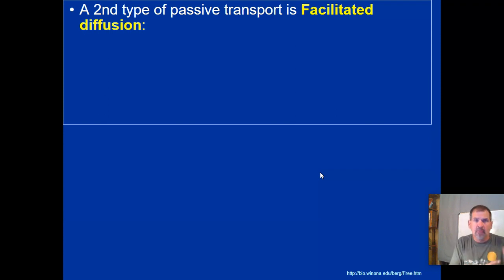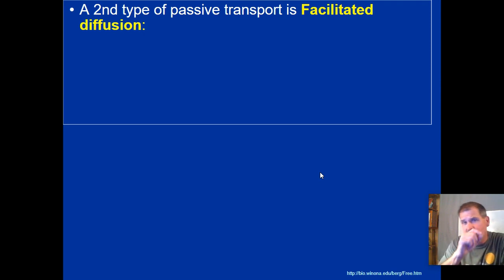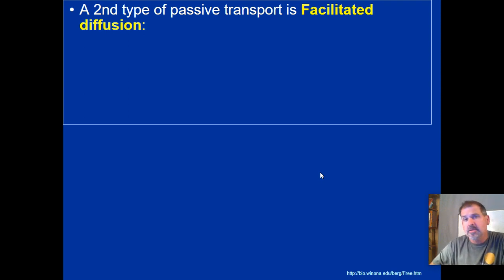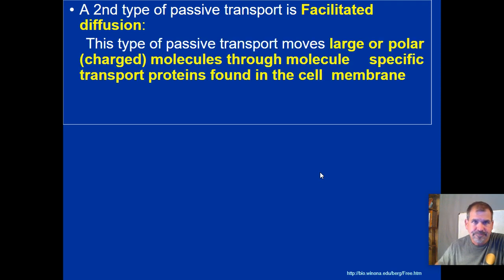The second type of passive transport is called facilitated diffusion — to facilitate means to help. In regular diffusion, particles are small and non-polar so they fit through the cell membrane. But some particles have a positive or negative charge and can't pass directly through, so they must pass through open channels or gates — and that's called facilitated diffusion.